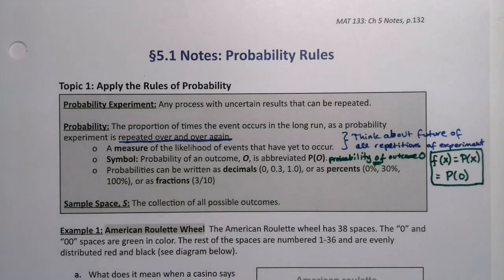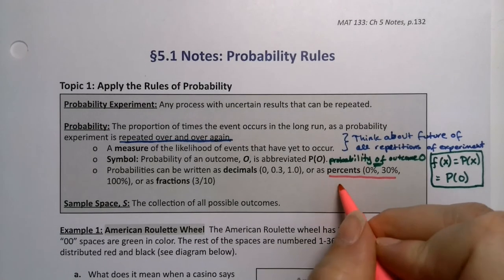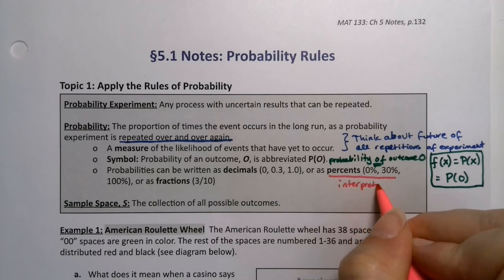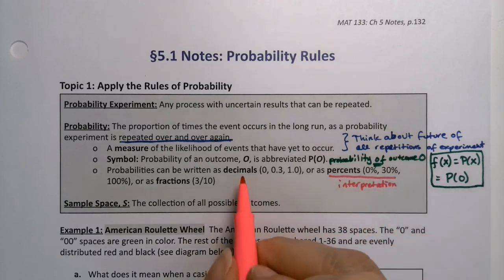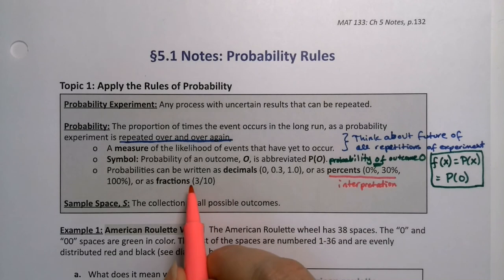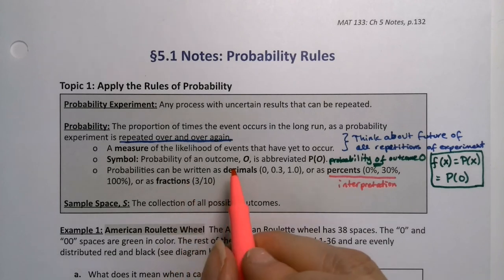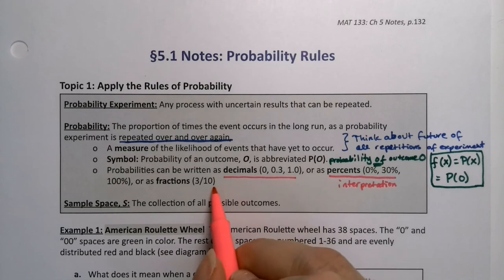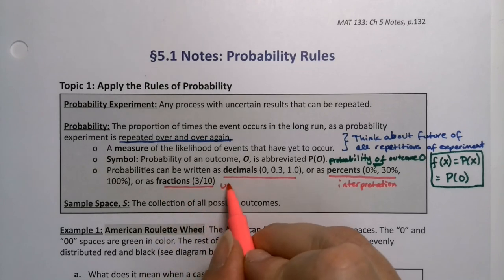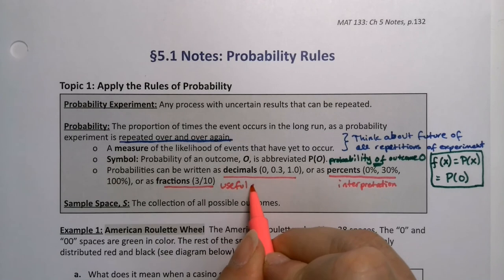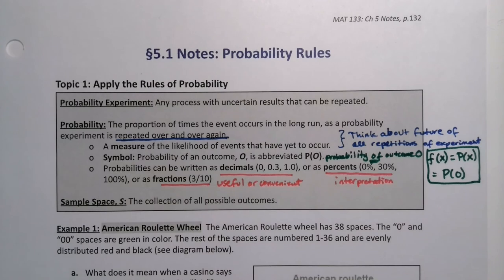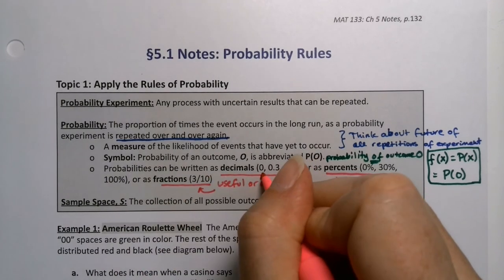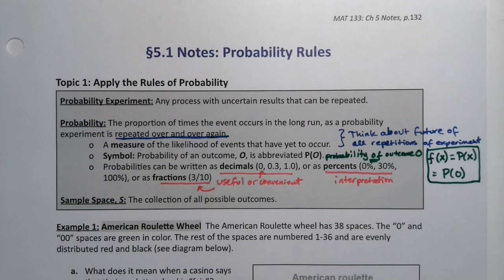Percents tend to be the most useful for interpretation, so these tend to be for interpretation and kind of only for interpretation. Decimals are the most mathematically useful, except when fractions are more useful. Decimals and fractions are mathematically useful or convenient, whichever one's more appropriate for your question. Usually decimals are more useful and convenient, but not always in probability.